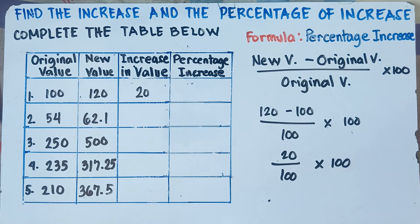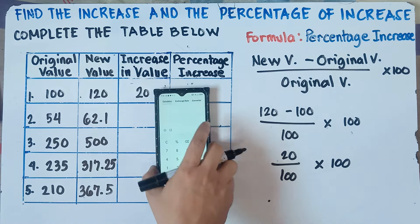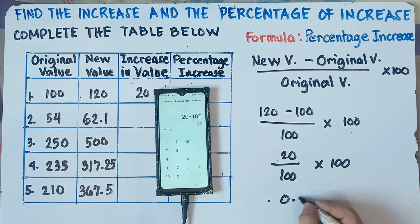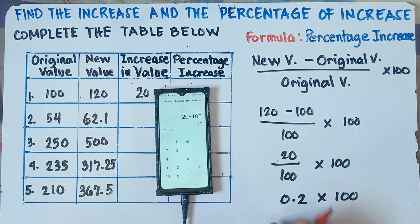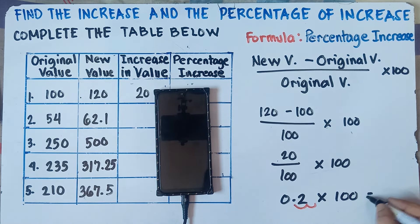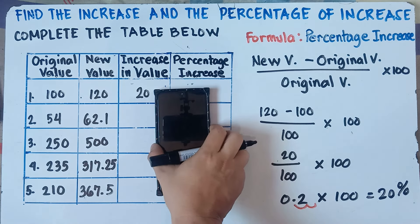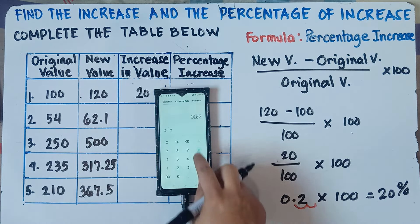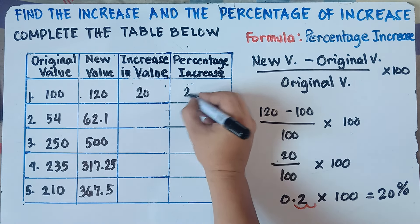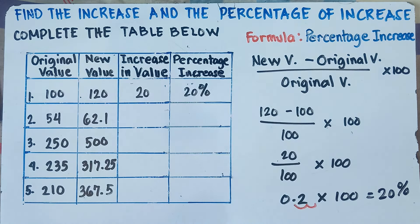So 20 divided by 100 — let's use our calculator. I hope your teacher will allow you to use a calculator. So 20 divided by 100 gives 0.2. Then 0.2 times 100 — just move the decimal point two places to the right — gives 20%. So the answer for number one is 20%.